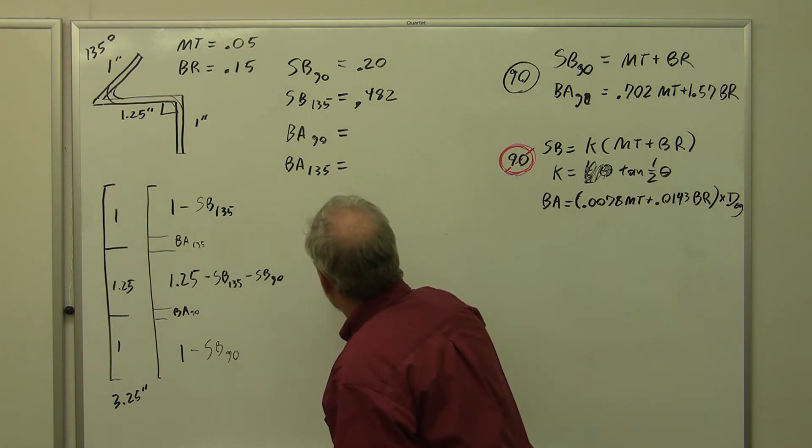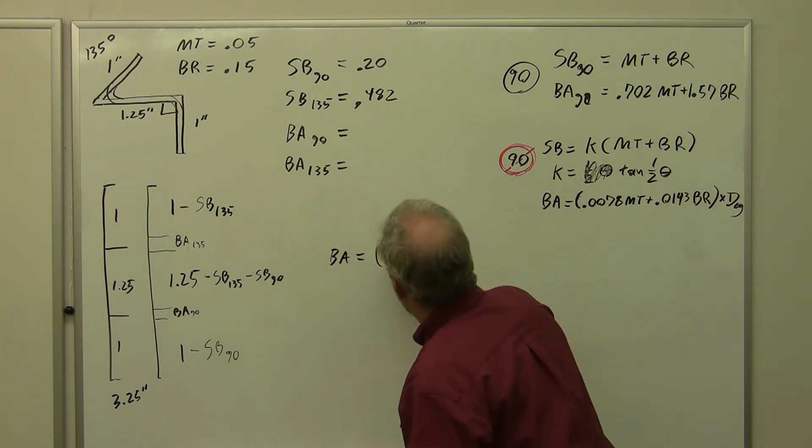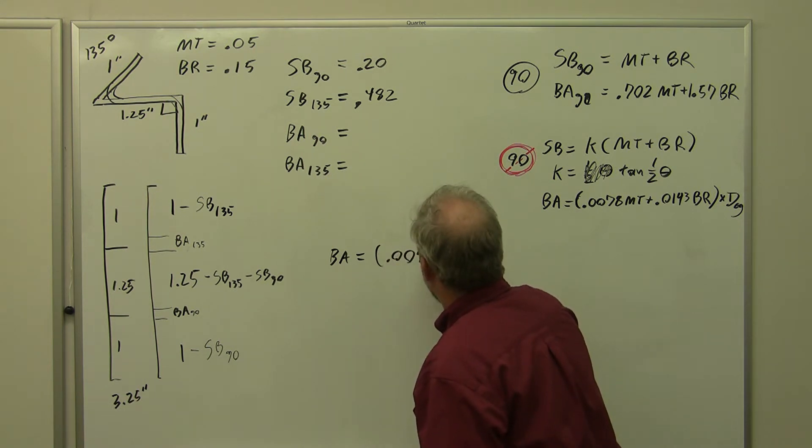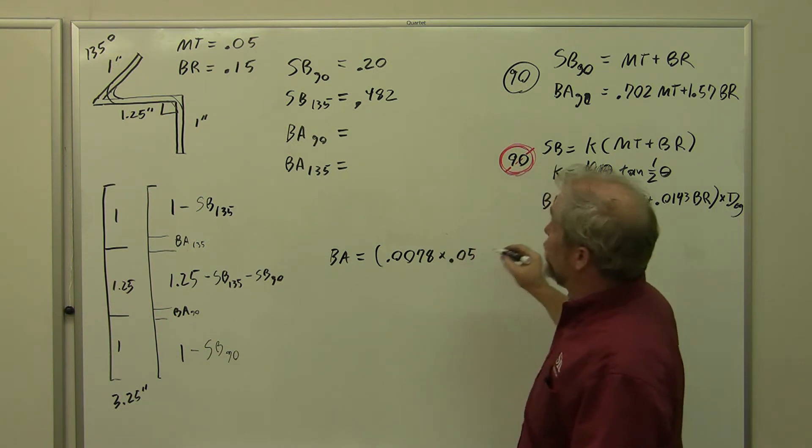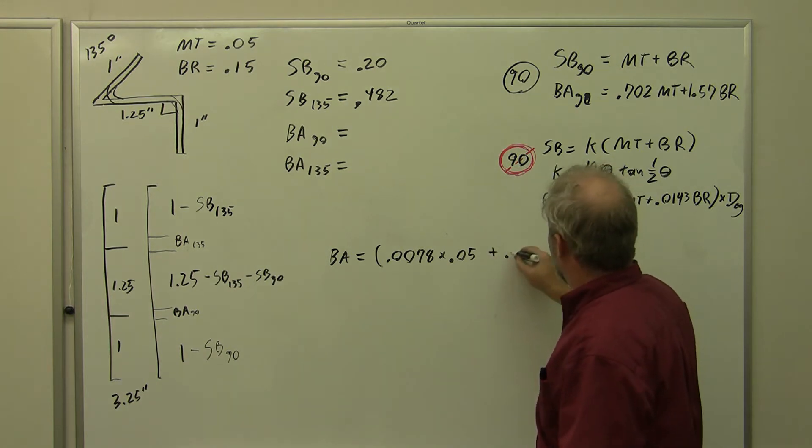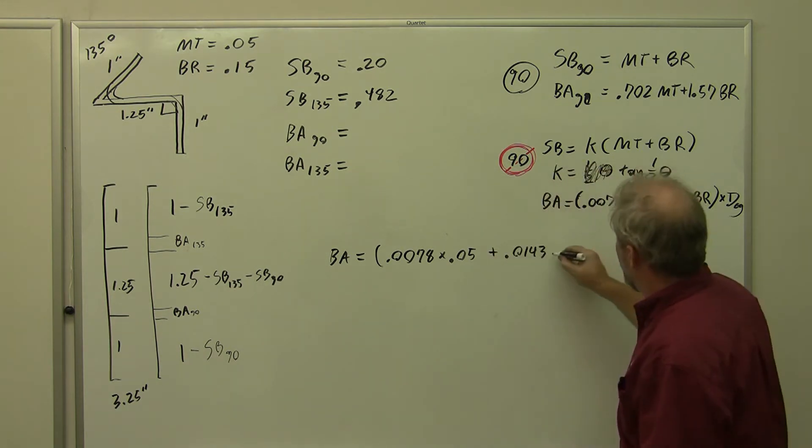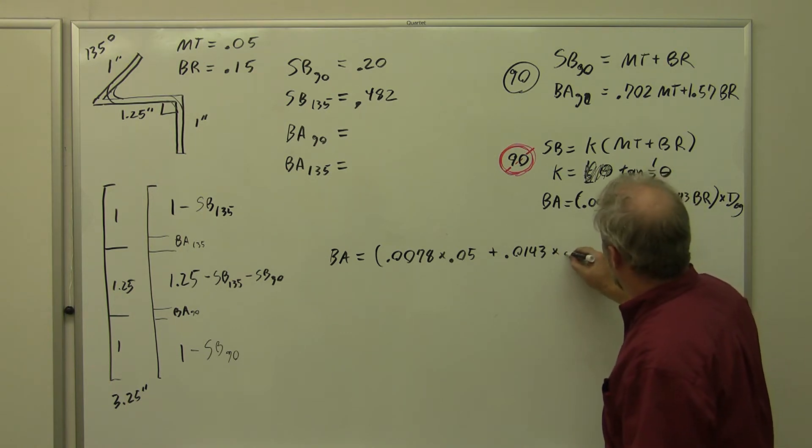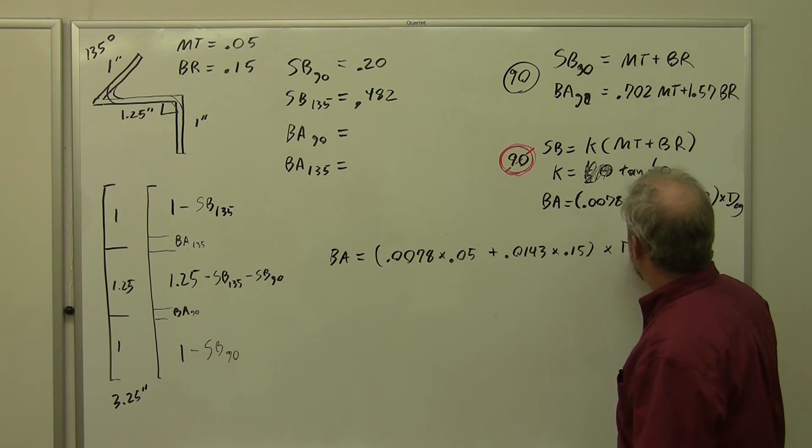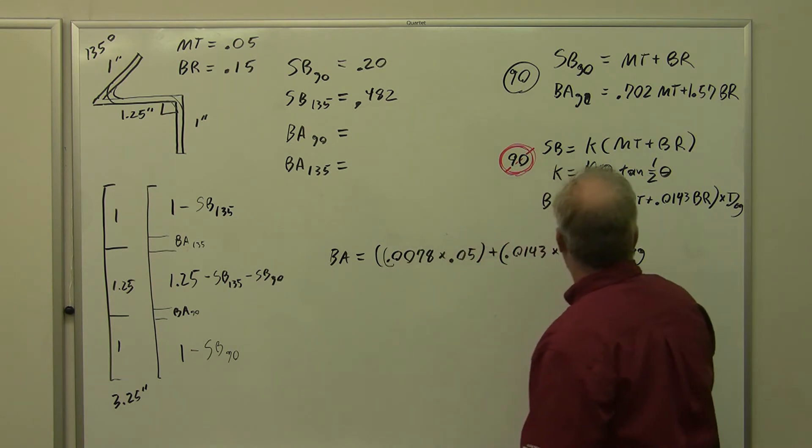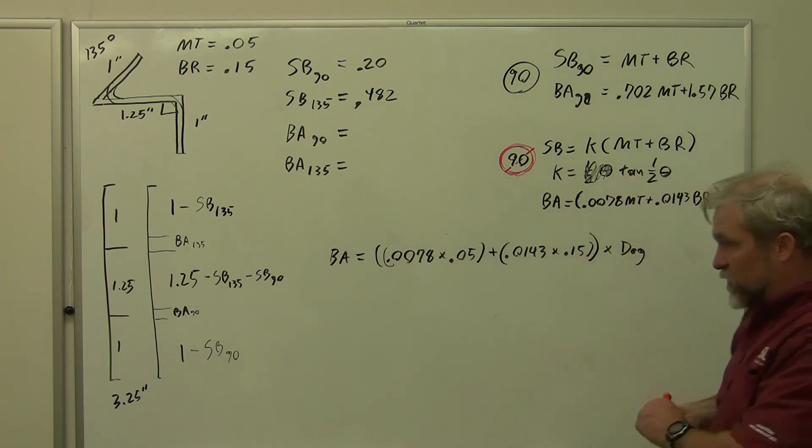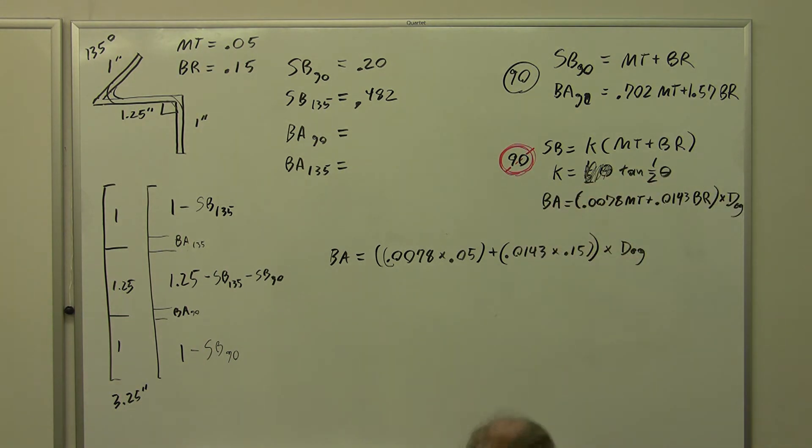Bend allowance equals 0.0078 times my material thickness, which is 0.05, plus 0.0143 times my bend radius, which is 0.15, and then I'm going to hit times the number of degrees. This is one term, this is the next term, and all of that goes together. So let's simplify out our terms.